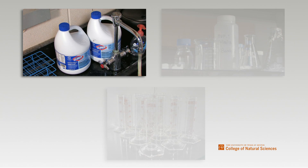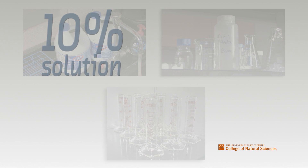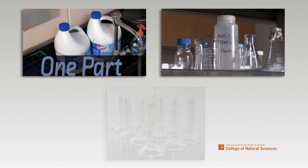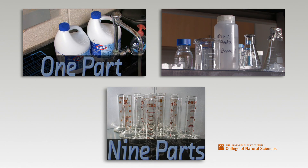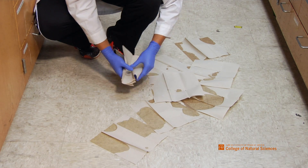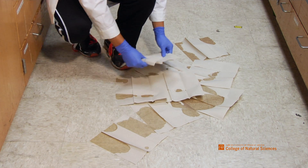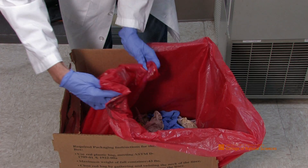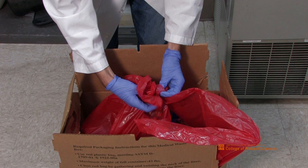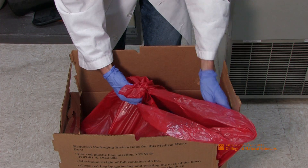If using bleach for your disinfectant, prepare a 10% bleach solution in a flask or beaker. This solution is one part bleach to nine parts water. Pour the bleach solution over the spill and cover it with paper towels. Allow 20 minutes of contact time, and then place all the spill cleanup materials and gloves into the biohazard bag for disposal.